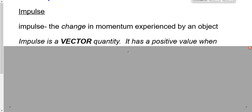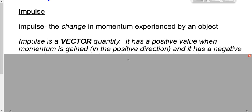Listen carefully — this can be a bit confusing. Impulse can be positive in a couple of different situations. One: if I gain momentum in the positive direction. Let's say the positive direction is to the right, over towards my desk. If I'm traveling in that direction and I speed up — I'm gaining momentum in the positive direction — that's a positive impulse.